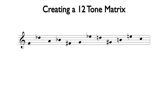Here is a 12-tone row. Notice that each of the notes of the chromatic scale are included without repetition. For this example, I have used flats for some notes and sharps for others. This is only out of preference. Since all of the notes are of equal importance, C-sharp or D-flat, for example, represent the same function and are therefore equivalent.